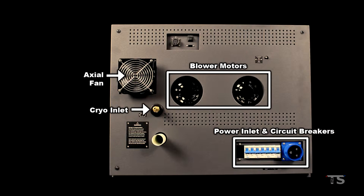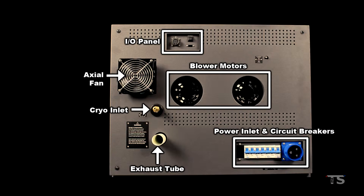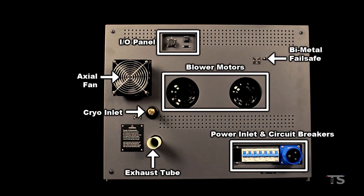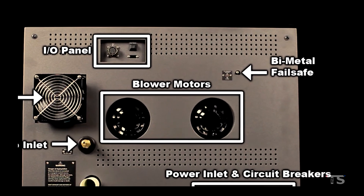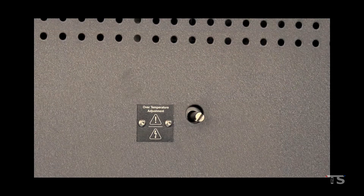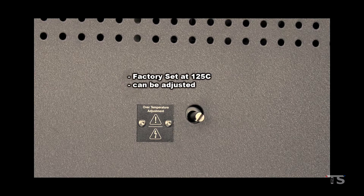The cryo inlet is where the cryogenic coolant line will be connected. In this training course, we are focusing on using liquid nitrogen, or LN2, as our coolant. The exhaust tube is where the chamber exhausts gaseous nitrogen. The I-O panel is where your controller will be connected to the chamber; some I-O panels have additional interfaces for lights and fail safes. The bi-metal fail safe is the default fail safe that comes with most chambers. It is a mechanical switch that will trip and shut down the cooling and heating capabilities of the chamber once an over-temperature condition occurs. It is factory set at 125 degrees Celsius, but can be adjusted.